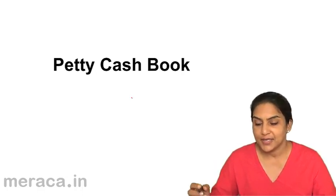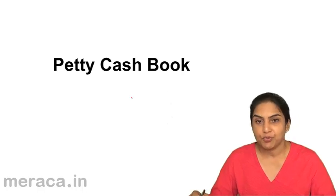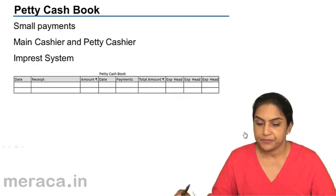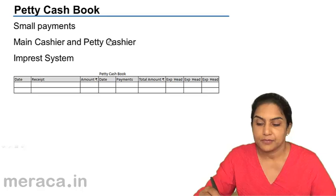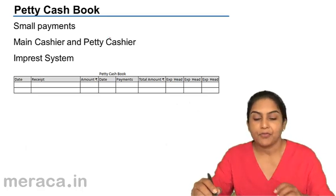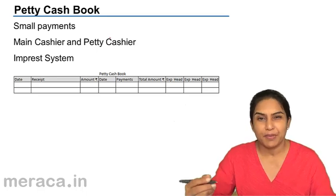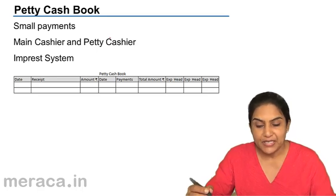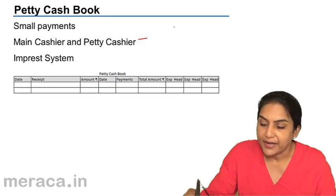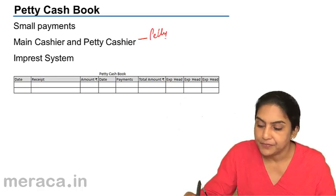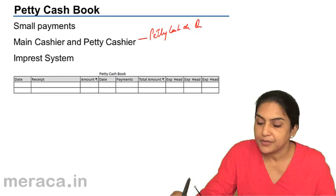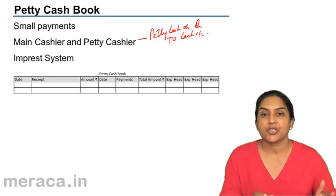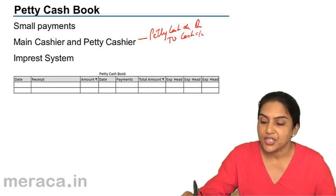So let us see how the petty cash book is maintained and what are the accounting entries involved. The petty cash book is maintained for small payments, for very small payments and regular daily payments. The main cashier gives cash to the petty cashier, and normally an entry is passed: petty cash account debit to cash. So the main cashier's balance of cash will come down and there is cash now with petty cash.